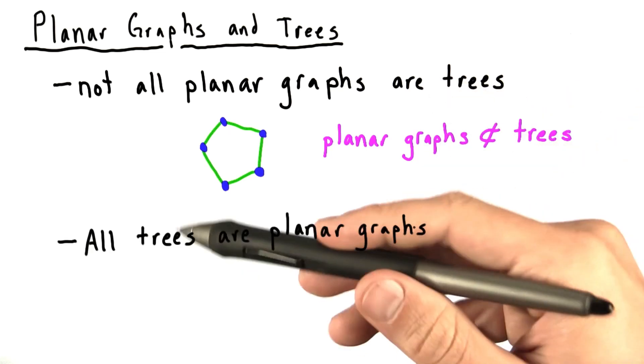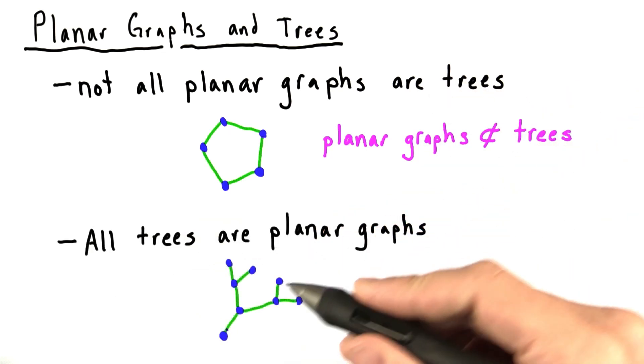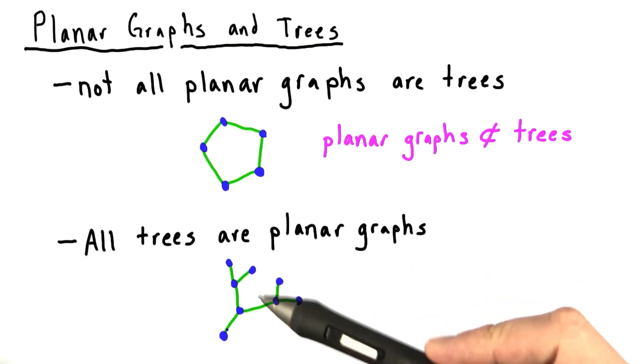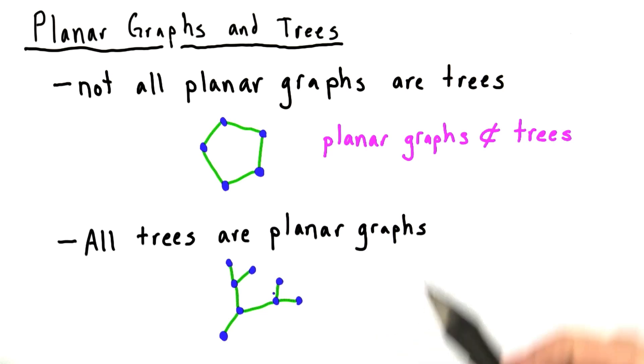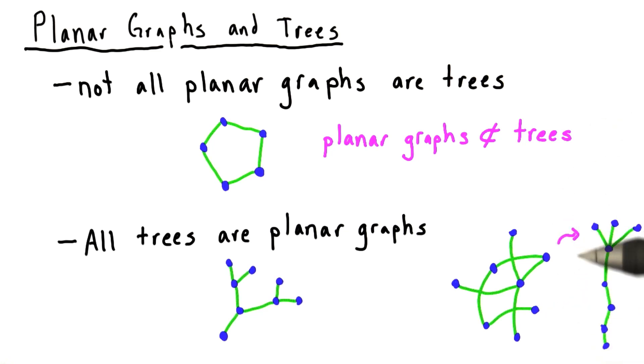On the other hand, all trees are planar graphs. For most trees, it's fairly intuitive to see how it could be drawn in the plane. For example, this one is already planar. But for other trees, it might not be so obvious that we can rearrange everything to lay it flat in a plane. And so it would be nice to have a proof that all trees are planar instead of relying just on intuition.